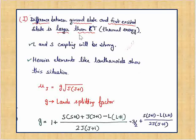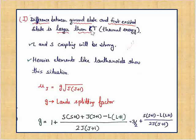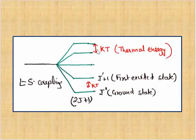The magnetic moment depends on the energy gap between the ground state and the first excited state. If the gap is larger than KT (thermal energy ~200 cm⁻¹ at 300 K), then L and S coupling is very strong. As shown in the diagram, the energy gap between ground state J and first excited state J+1 is large, while KT is small and does not bridge this gap.